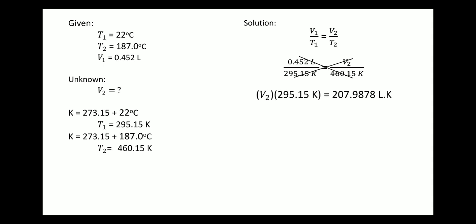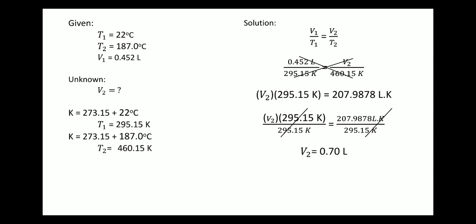We need to cancel 295.15 by dividing both sides by 295.15. We cancel it on the left side and cancel Kelvin on the right side. Dividing 207.9878 liters by 295.15, V2 is equal to 0.70 liter.